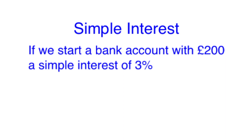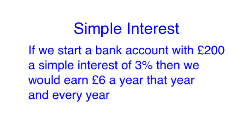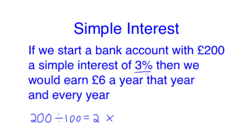Let's say for example we start a bank account with £200. A simple interest of 3% each year would earn us £6 a year, and that's the same for every year with a simple interest account. To find out what 3% of the original £200 would be, we divide our original 200 by 100, which gives us 1% or £2, and then we times this by 3 as it's 3% we're looking for. This gives us £6.